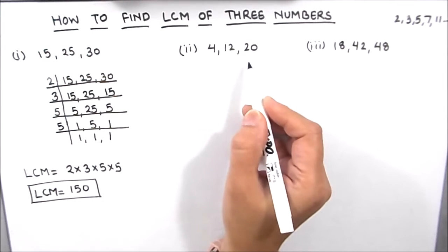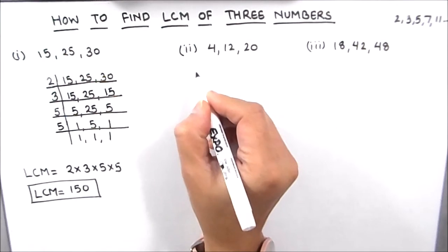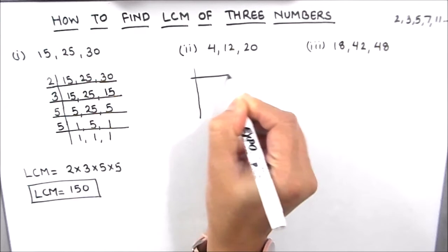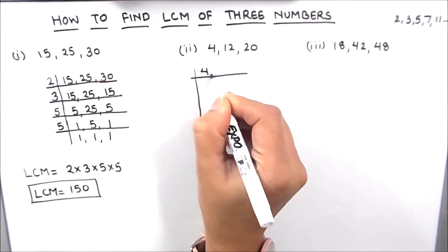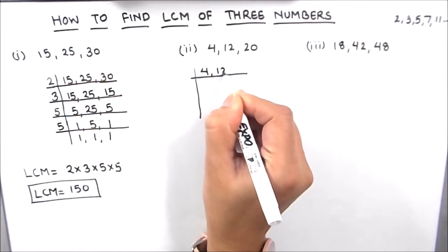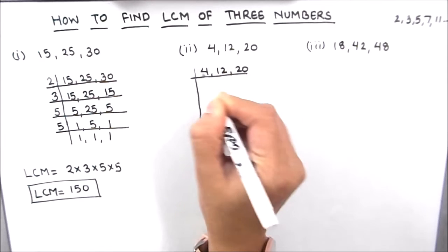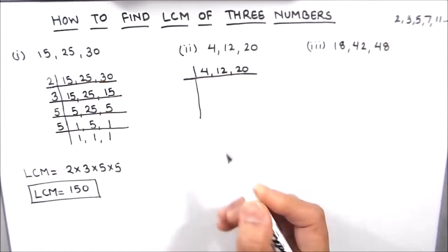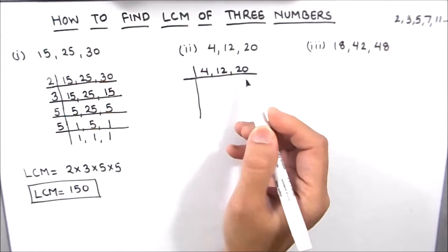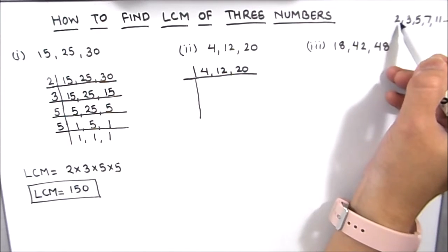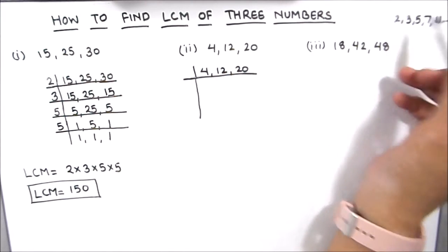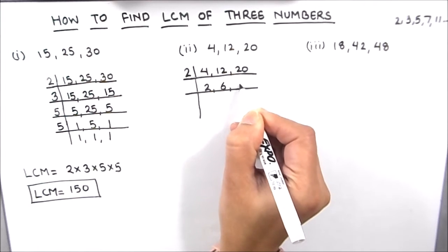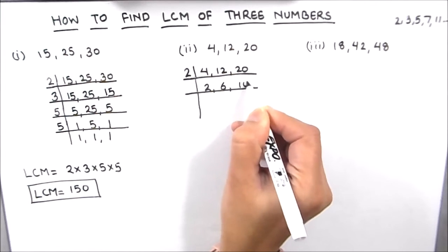Let's move on to our second example and find the LCM of 4, 12 and 20. Here too we are going to write the three numbers together on the same ladder and we'll use the prime factorization method. As all the three numbers are even, we are going to use 2 as the first prime divisor. So 2 times 2 is 4, 2 times 6 is 12 and 2 times 10 is 20.